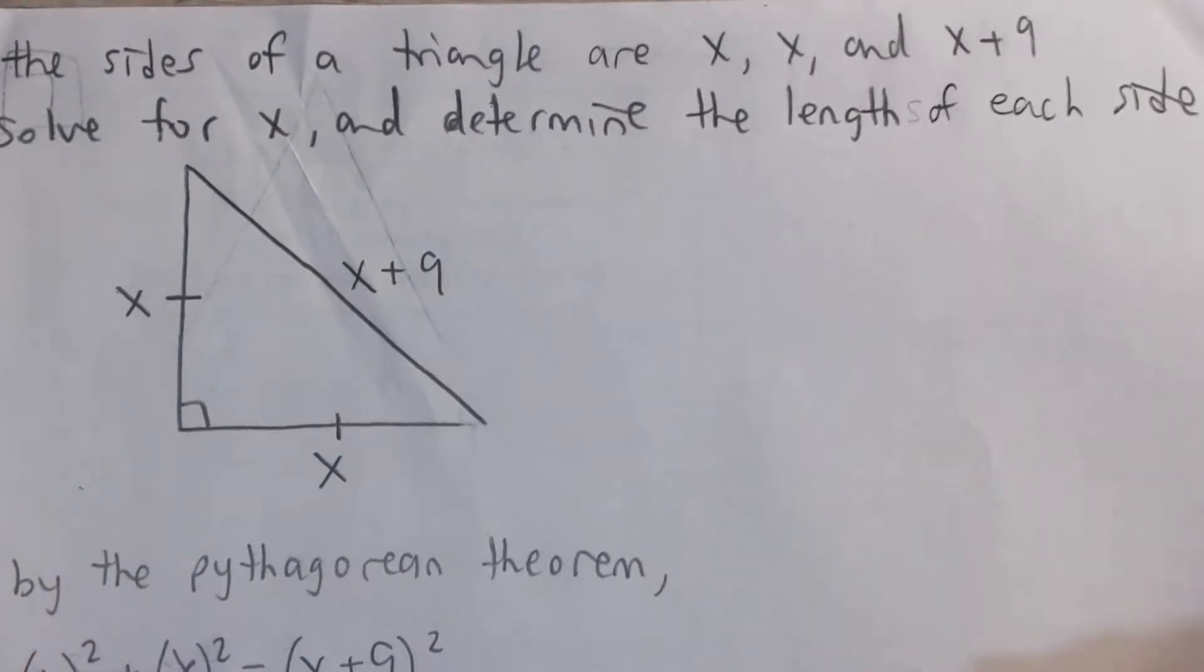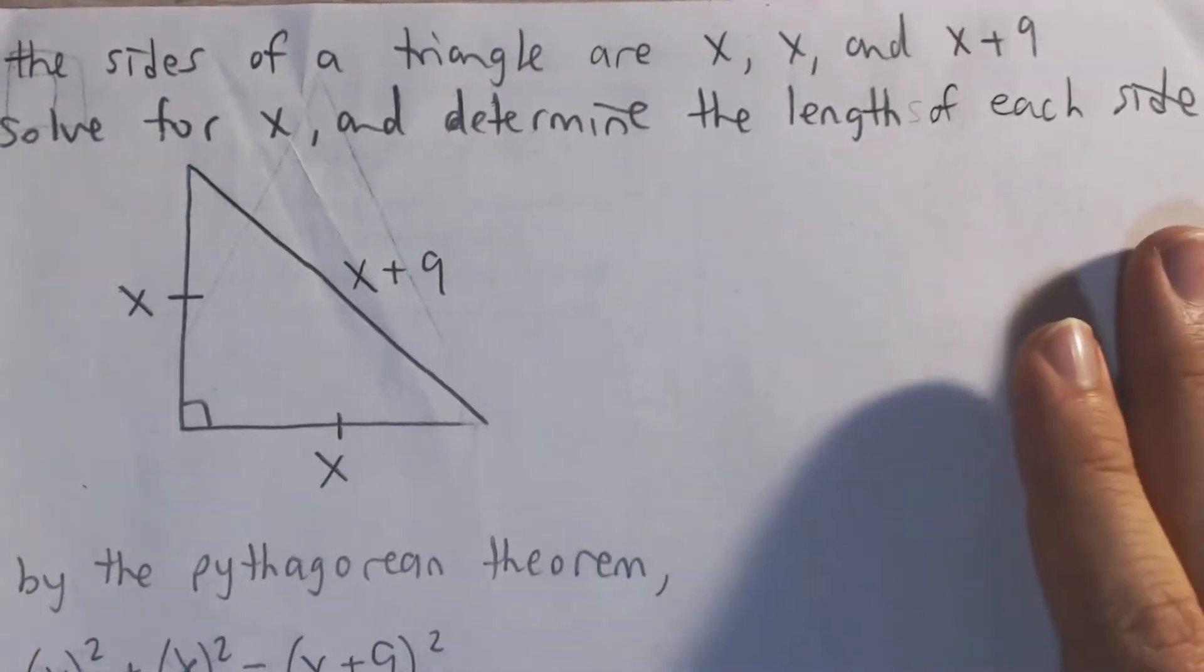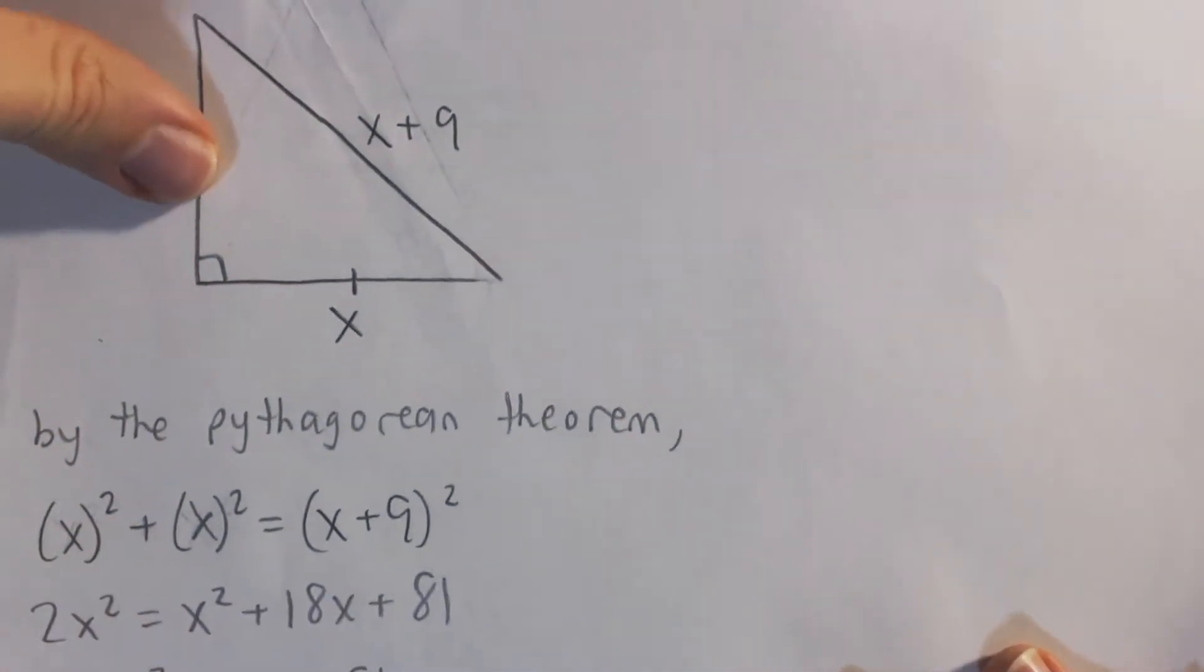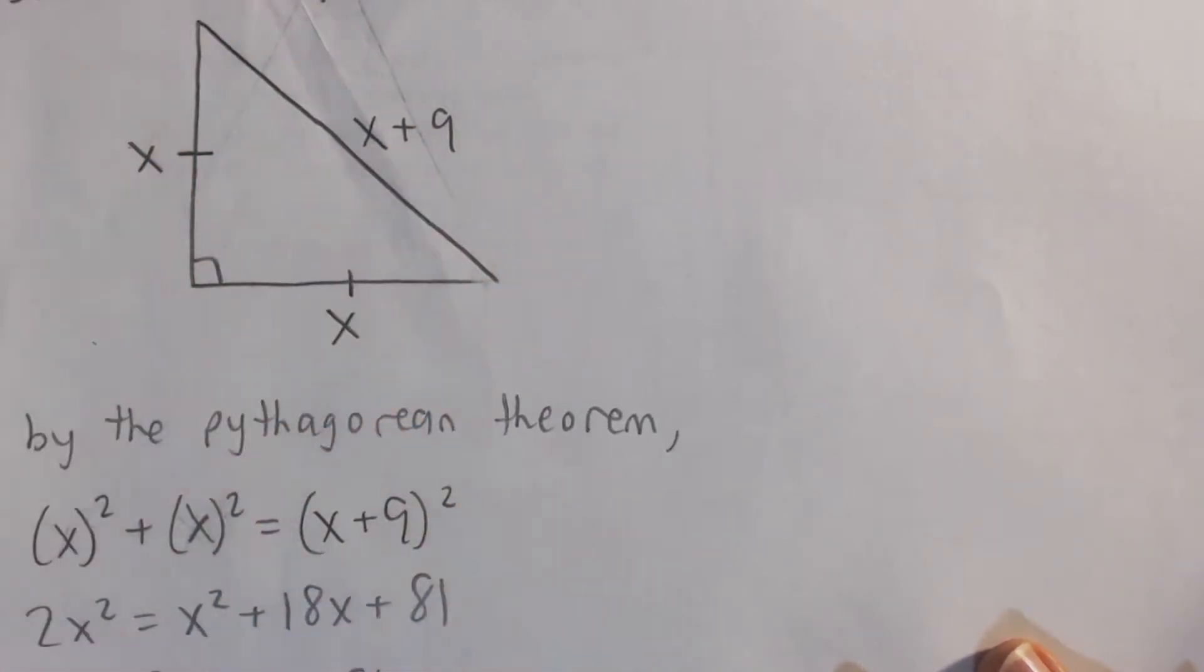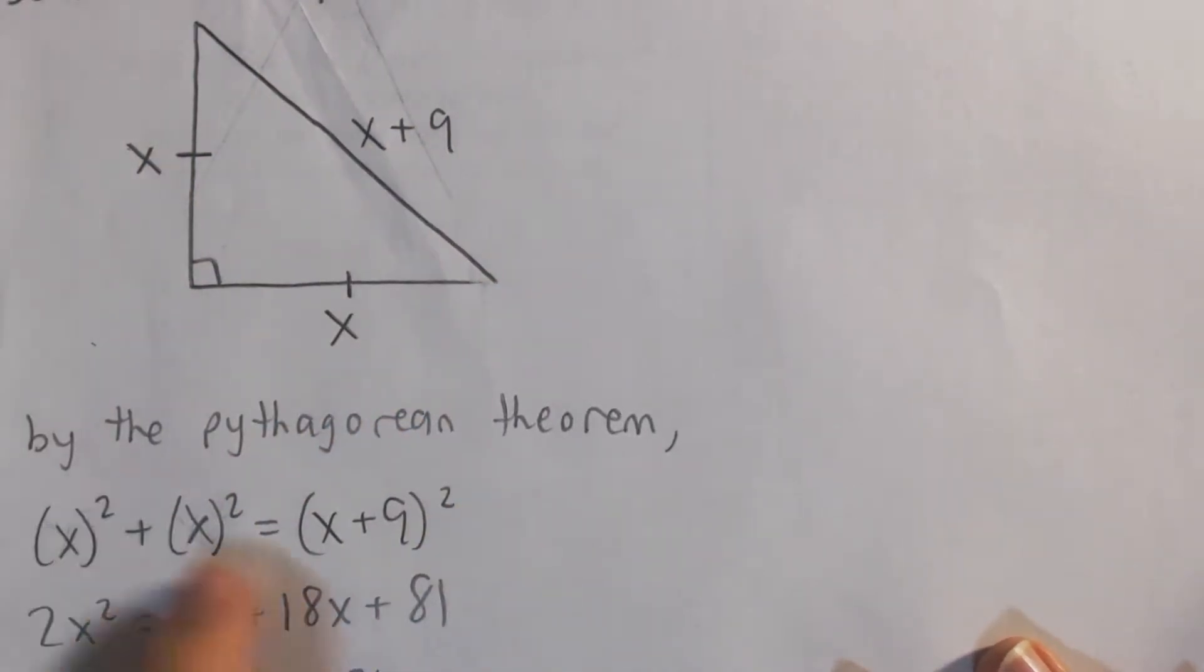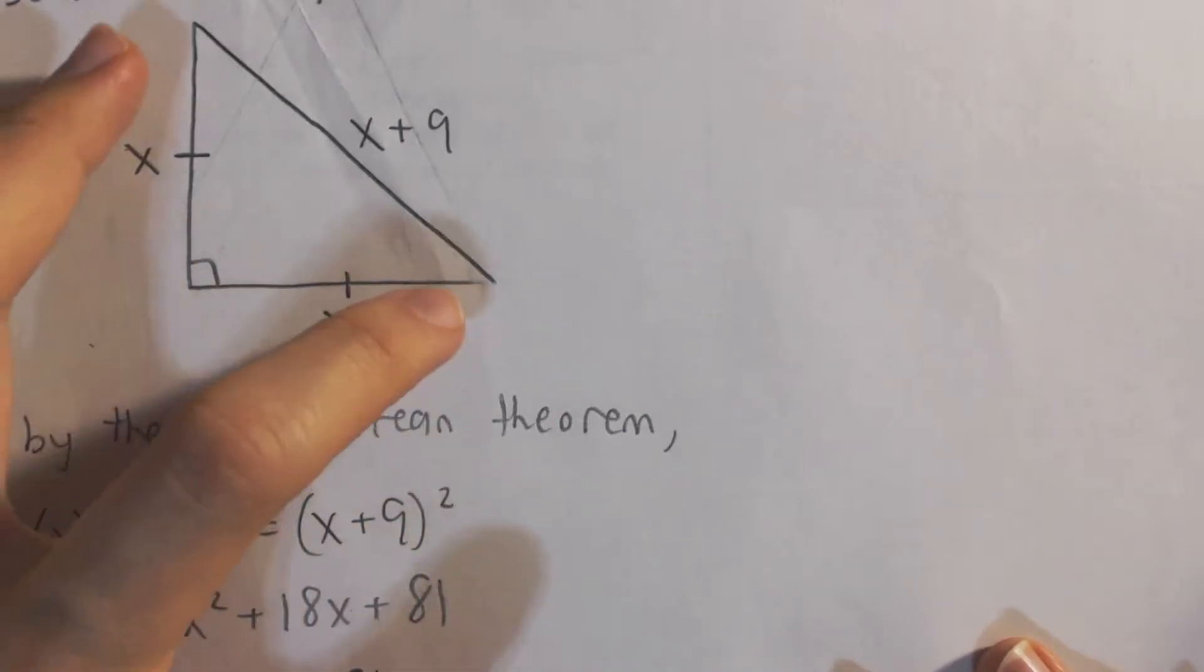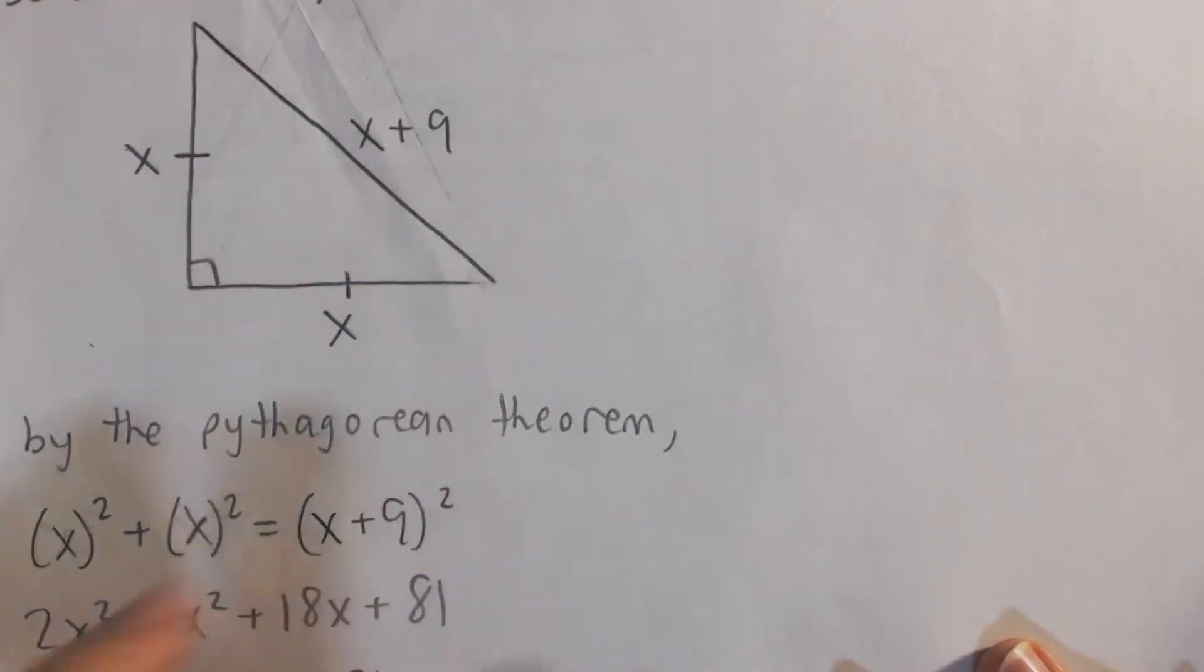And so, how are we going to solve for x? Well, what we can do is relate all three of these sides by the Pythagorean theorem. So we know that a squared plus b squared is equal to the hypotenuse squared. And so that's going to be x squared plus x squared is equal to x plus 9, the length of the hypotenuse, all squared.